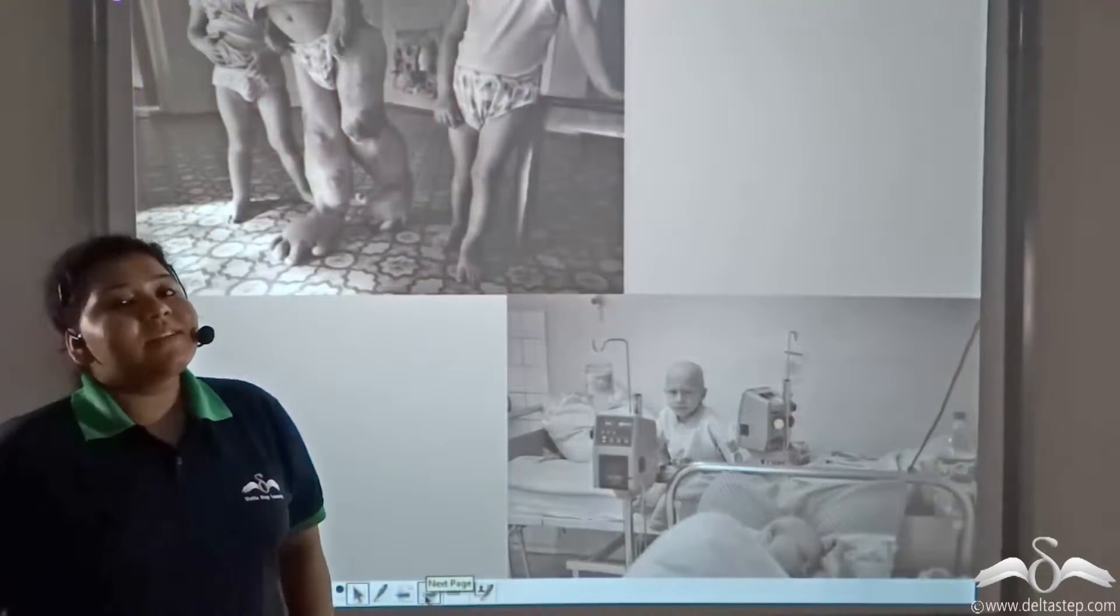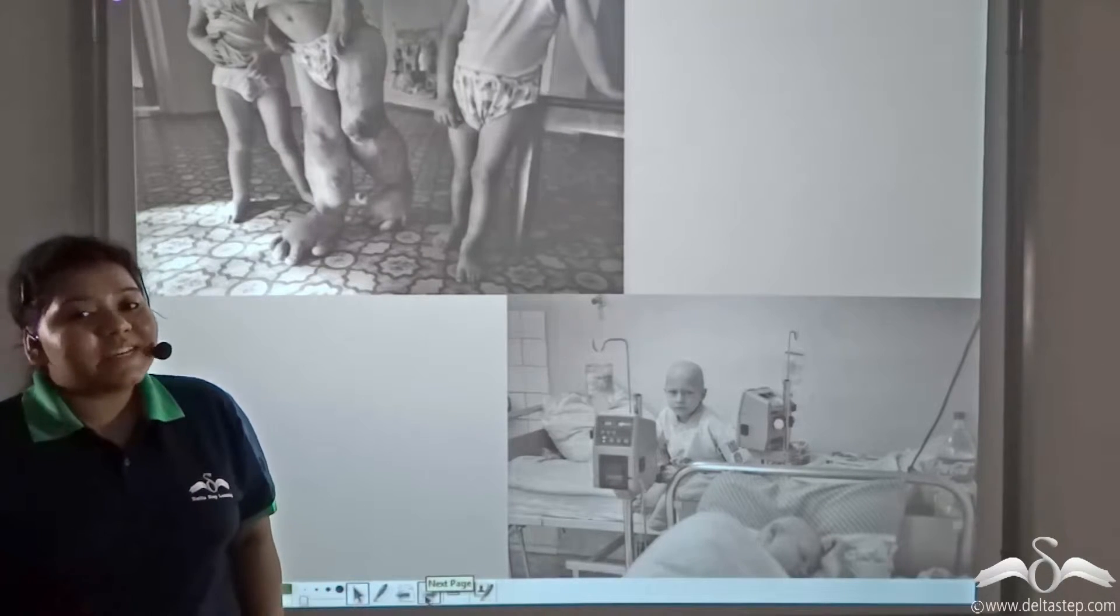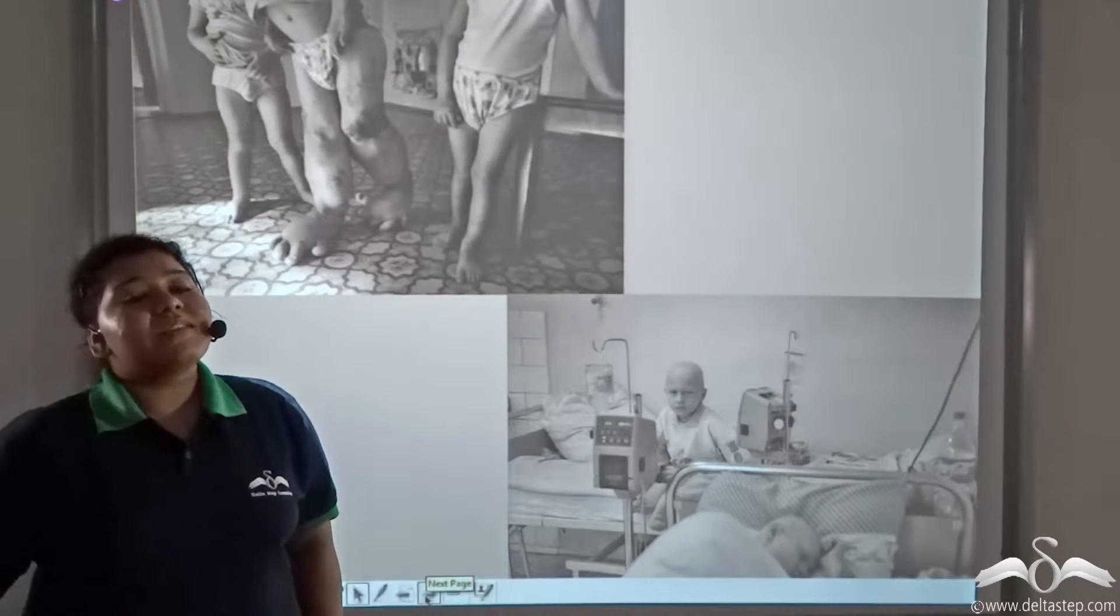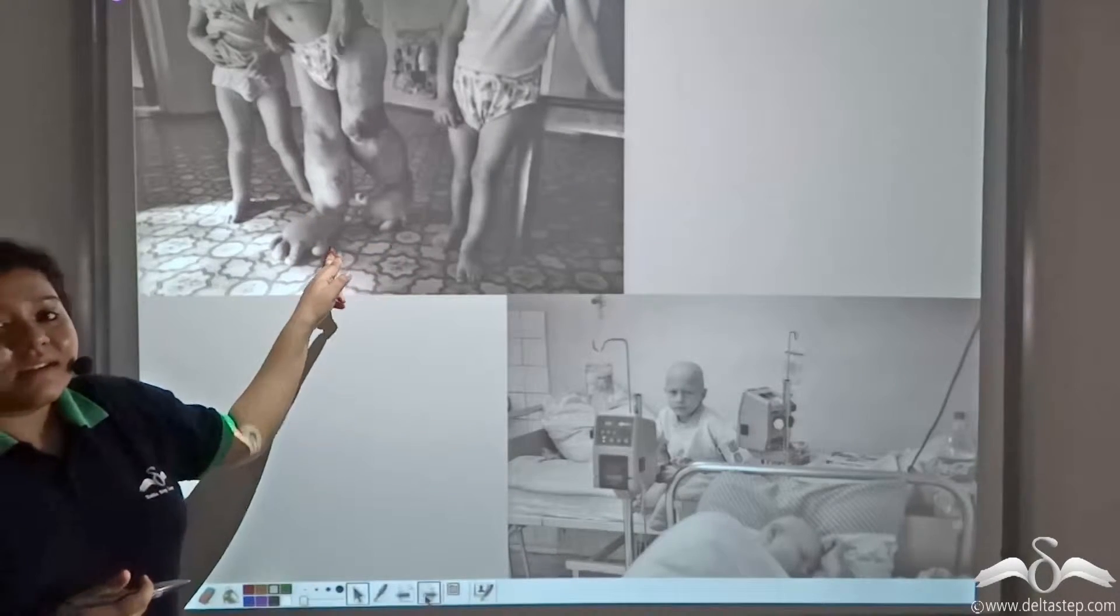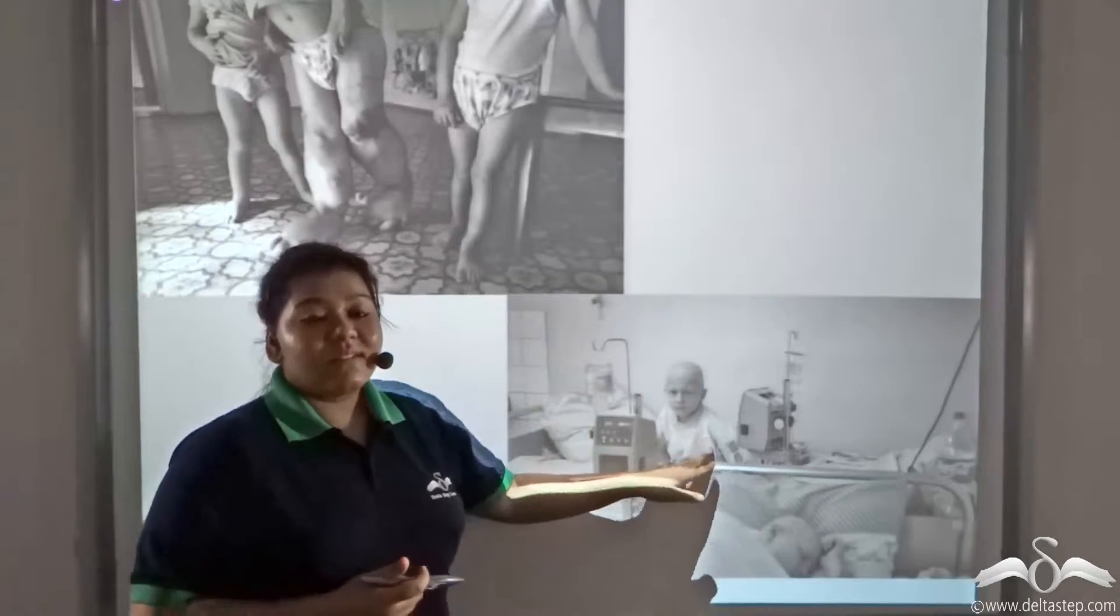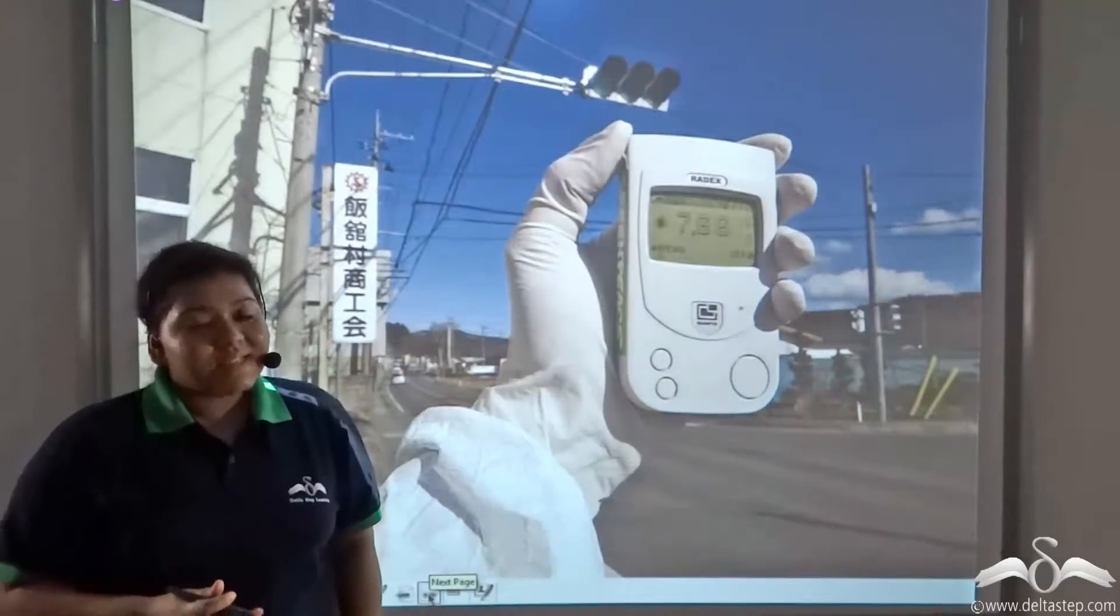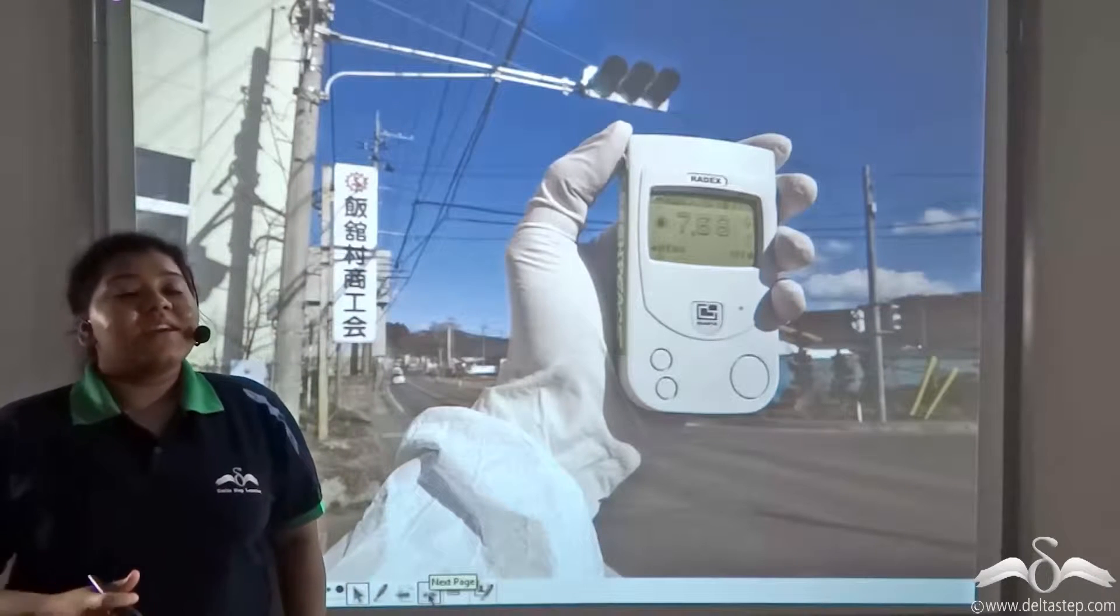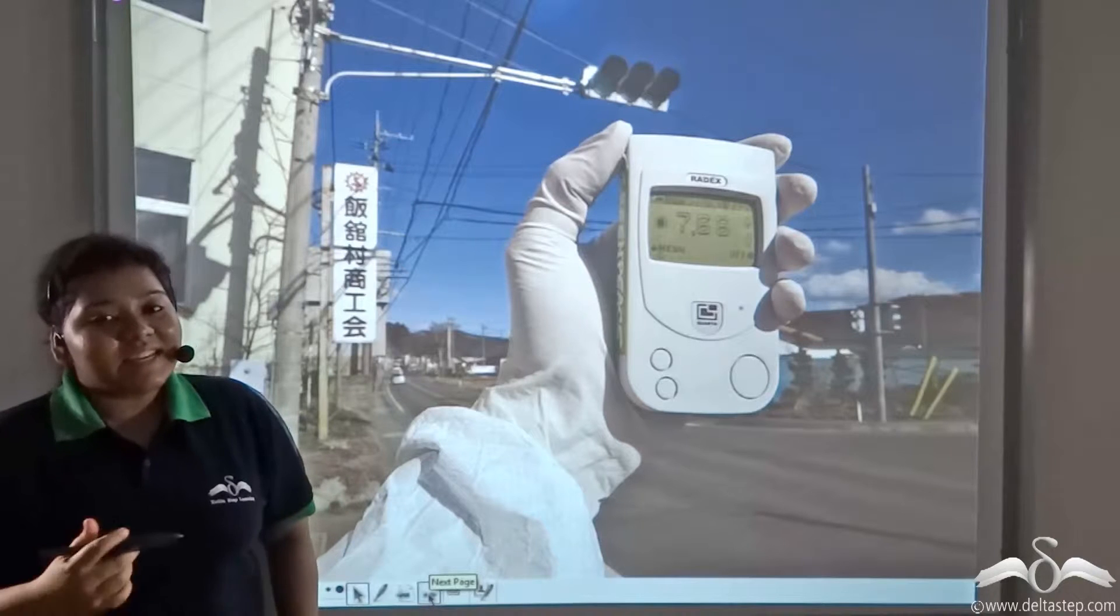Many people died immediately and a lot suffered from radiation exposure causing various diseases in the body such as mutation and cancer. Why does this happen? Well, this is because radiation causes mutation which is the change in the DNA structure.